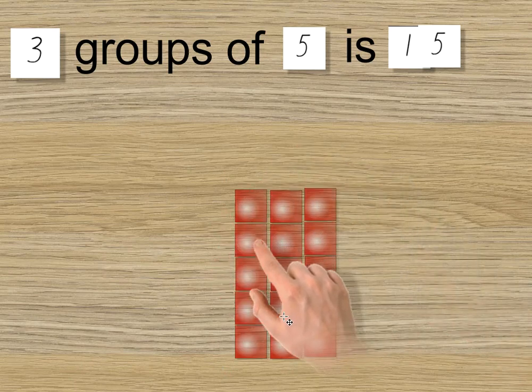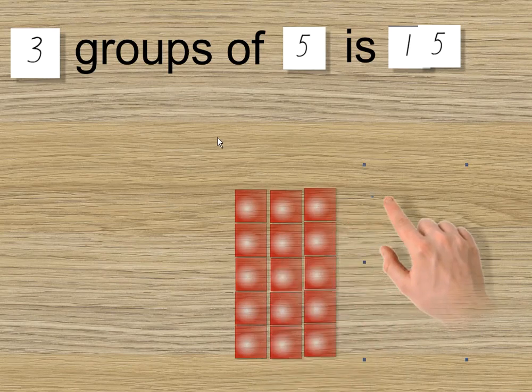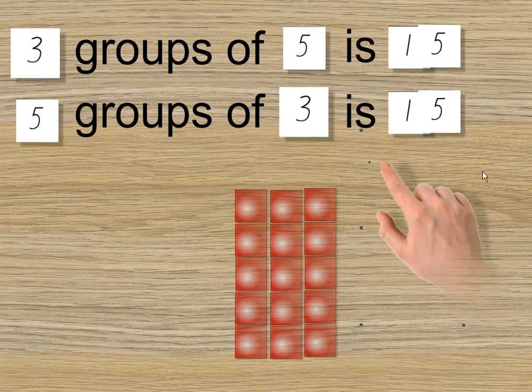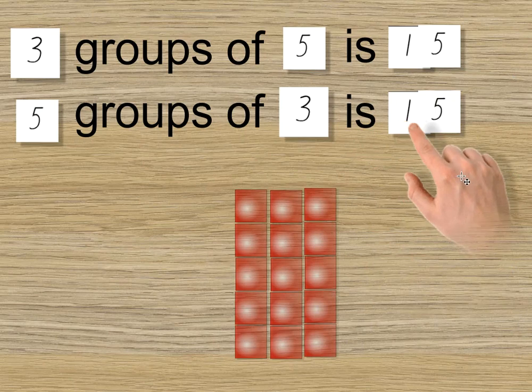Maybe you can see the groups differently now. One group, two groups, three groups, four groups, five groups of three. Let's record that for a moment. There you are. Three groups of five is fifteen. And five groups of three is fifteen.